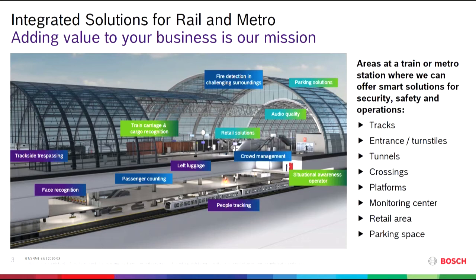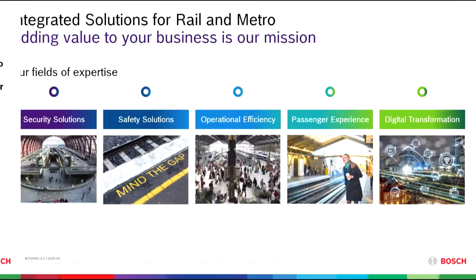We now approach our next stop: the five pillars — our fields of expertise. These five pillars are always the same and applicable across all key verticals: industry, retail, airports, and rail and metro. The first pillar concerns human beings — whether described as employee experience or customer experience, the human being is always the central focus.